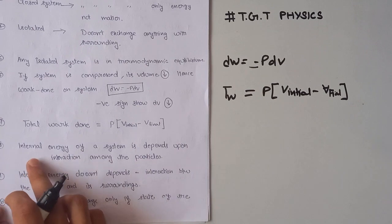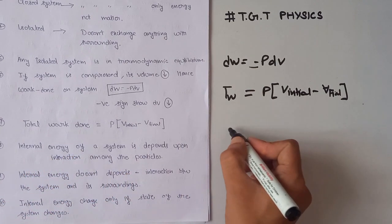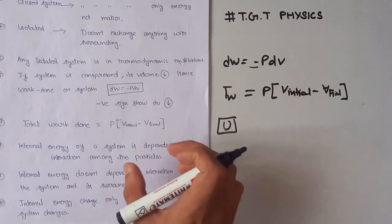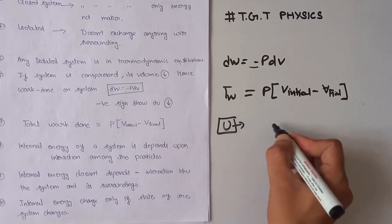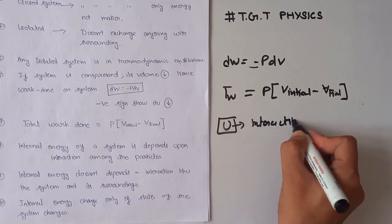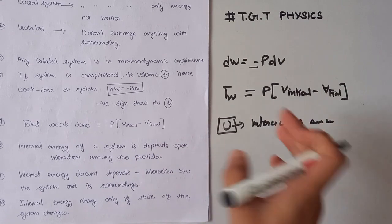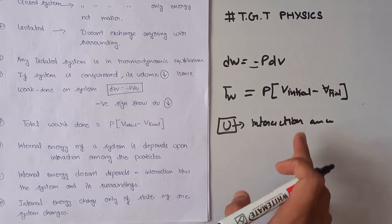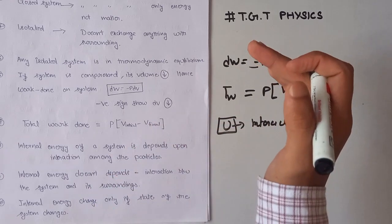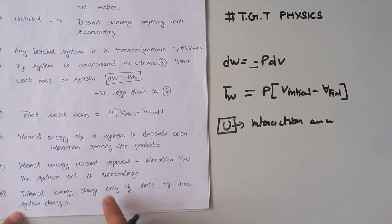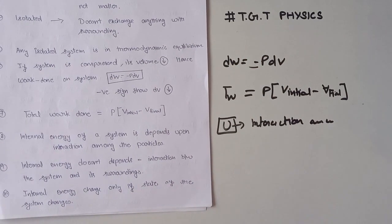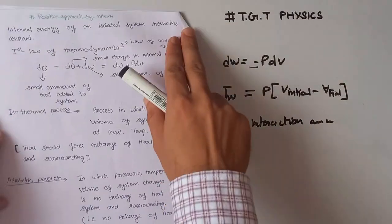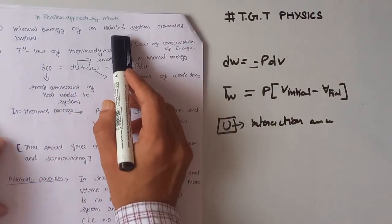Our next important key point is internal energy of a system. Internal energy is denoted by U. Internal energy of a system depends upon the interaction among particles. It does not depend upon the interaction between the system and the surrounding. Internal energy changes only if the state of the system changes.